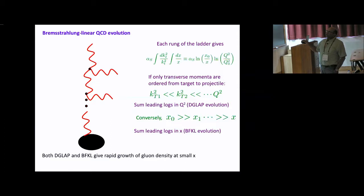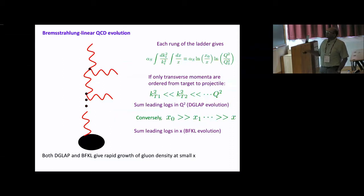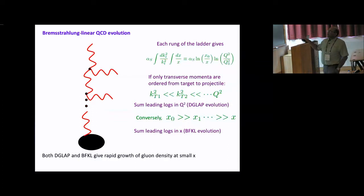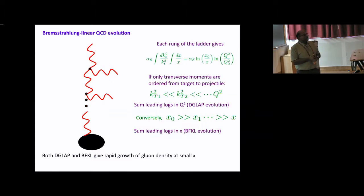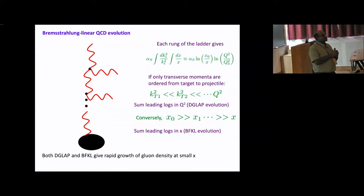For each rung of the ladder you get αs × log(x) × log(Q²) roughly. This is very different from QED: in QED a similar process is unlikely because α_EM is very small, requiring very high energies for phase-space logs to compensate. In QCD, αs is not particularly small, so at sufficiently small x or large Q² these logs compensate for αs, meaning there's no penalty factor for emitting more and more gluons.